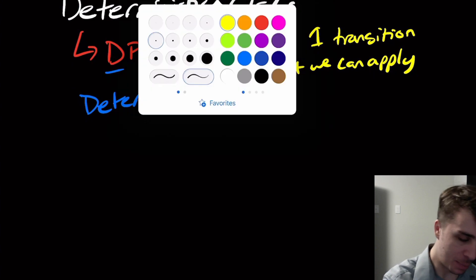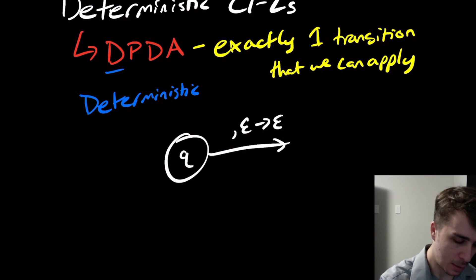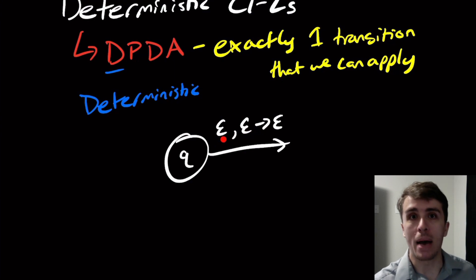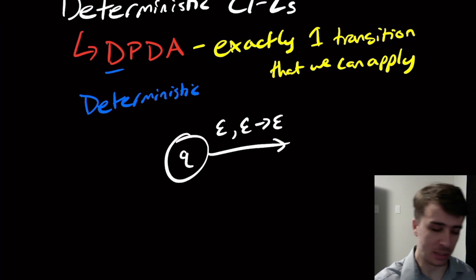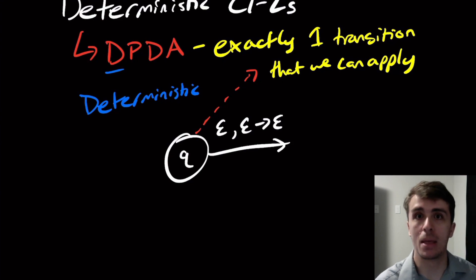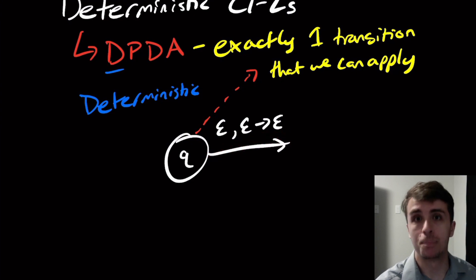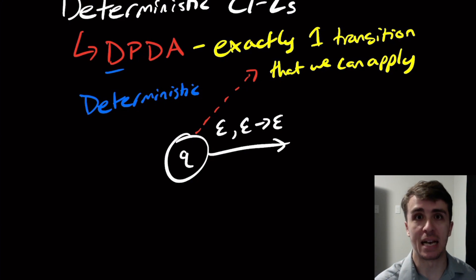As an example: if we have a state Q with a triple-epsilon transition, then no matter what is on the input and whatever is on the stack, I can always apply this transition. So if I have some other transition coming out of the same state, I could in principle apply both this one and that one, because the triple-epsilon will match with any possible input and stack character. That's a problem for determinism.